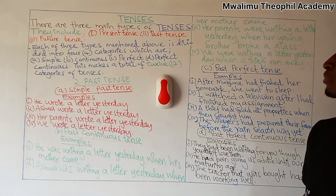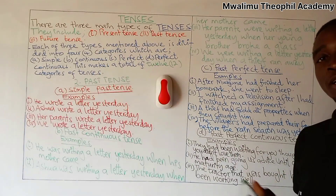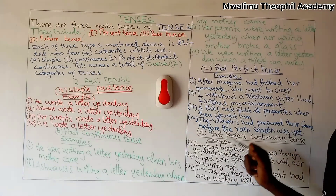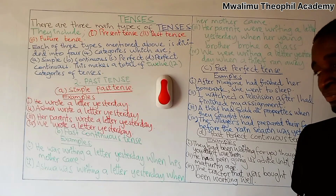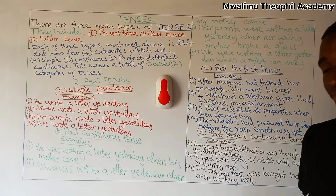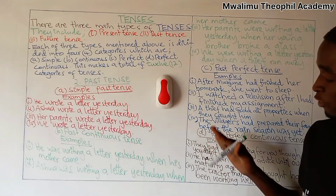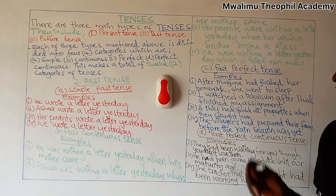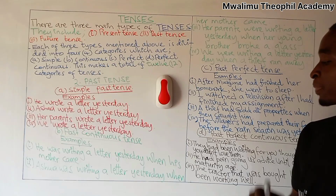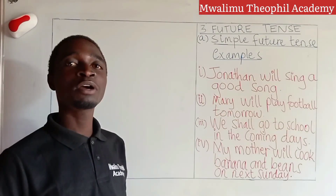After these three categories of past tense, let us see the last category: past perfect continuous tense. The first example: they had been waiting for you though you didn't love them. A second example: he had been giving us advice until our matured age. A third example: the tractor that was bought had been working well. In sentences in past perfect continuous tense, we should have 'had,' followed by 'been,' and the main verb ending with '-ing.'